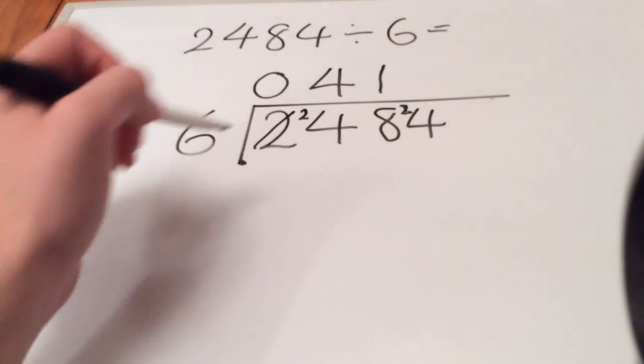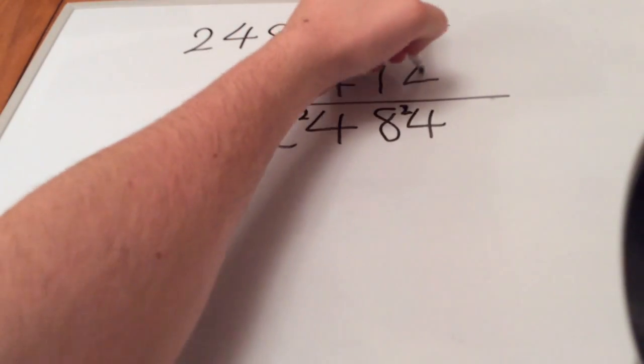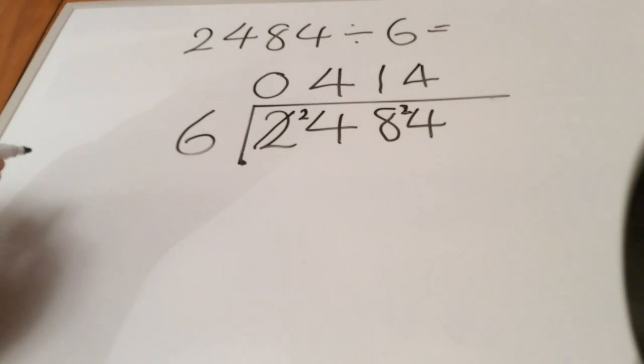How many times can we get 6 into 24? Well we've worked that out before and it's 4. So 2484 divided by 6 is 414.